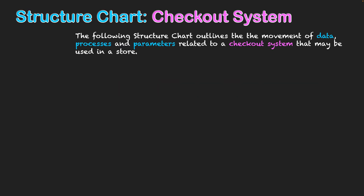This is a structure chart example for a checkout system. The following structure chart outlines the movement of data, processes and parameters related to a checkout system that may be used in a store. Think of this in many scale-size stores — a grocery store where you're buying many products, or a retail store like JB Hi-Fi where you might be buying one product at a time. You can also think about this system in the context of user-oriented or employee-oriented systems, where it's either the customer or an employee using the system to put products through at checkout. See if you can see this logic as we go through this diagram.